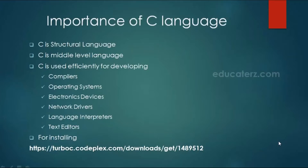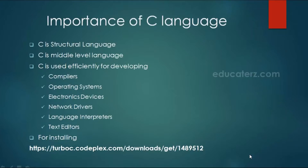Now, what is the importance of C language? First, C is a structural language. Structural programming is a programming paradigm aimed at improving the clarity, quality, and development time of a computer program by making use of subroutines, blocks, loops, etc. C is also called a middle-level language, meaning it has the ease of programming like a higher-level language but also has the efficiency of a lower-level language.